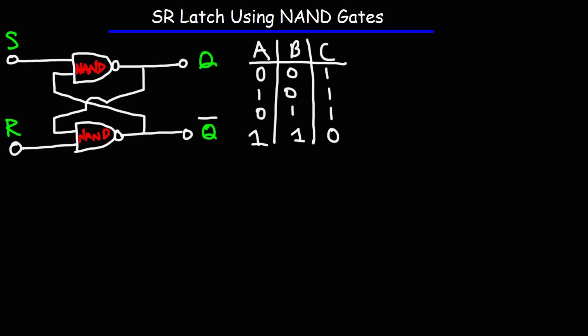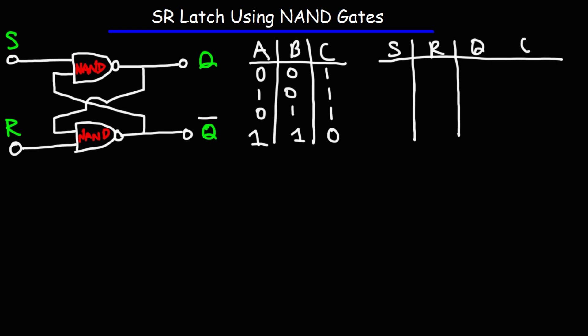Now let's write the truth table for the SR latch using NAND gates, as shown on the screen. Sometimes Q and Q bar are in opposite places, and that changes the truth table. Feel free to take some notes, and throughout the video we'll talk about why the truth table works the way it does.